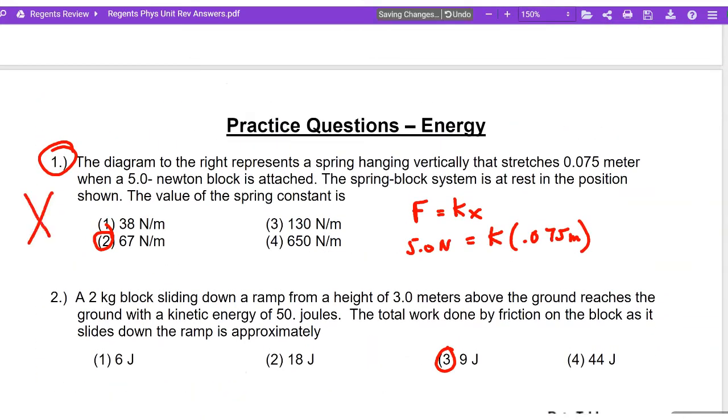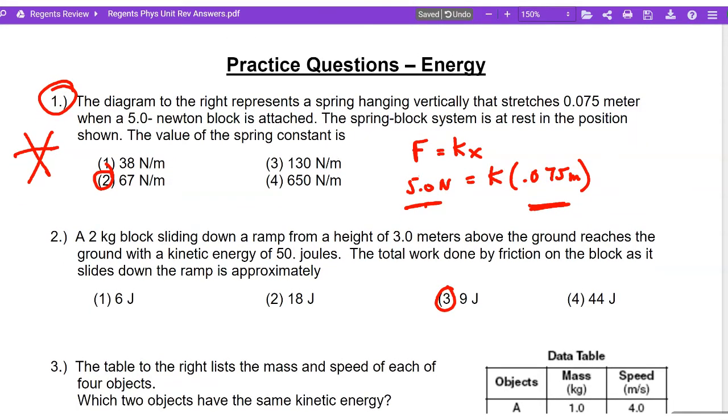Now, this is also on every single region. F equals K times X. You're told that the force on a spring is 5 and the stretch is 0.075, so plug it in. Divide both sides by 0.075 meters.